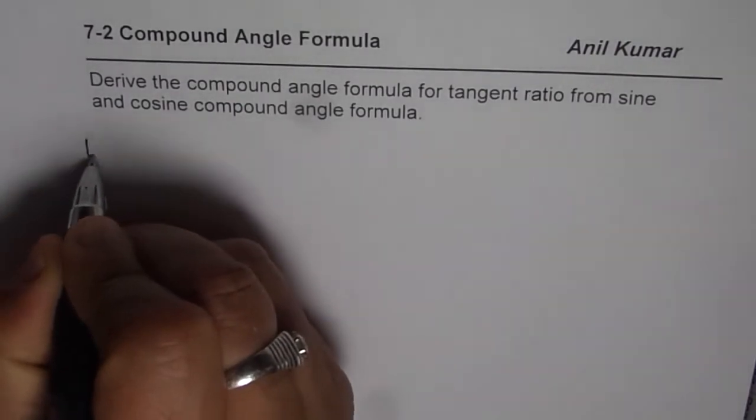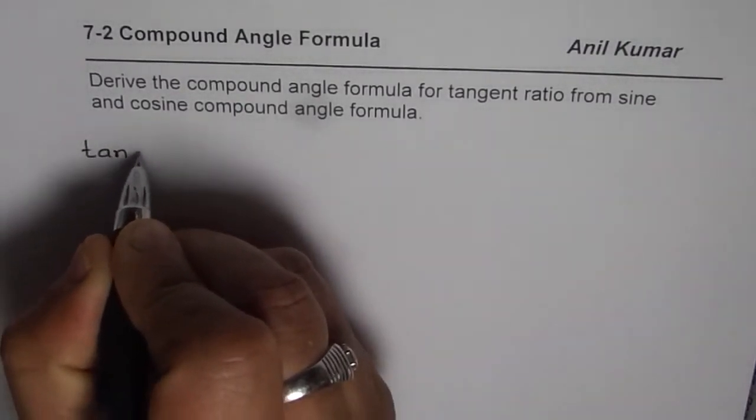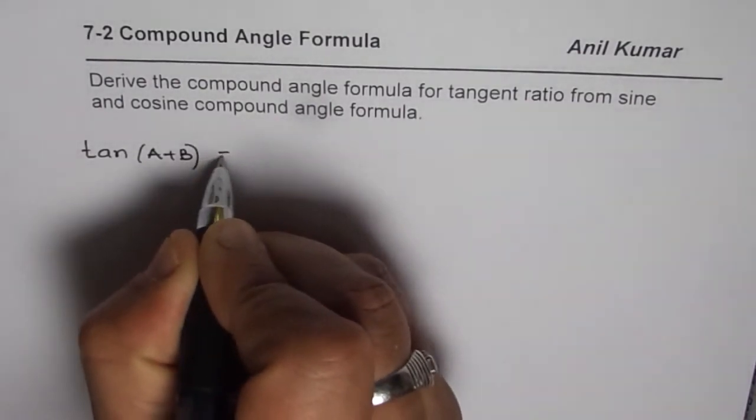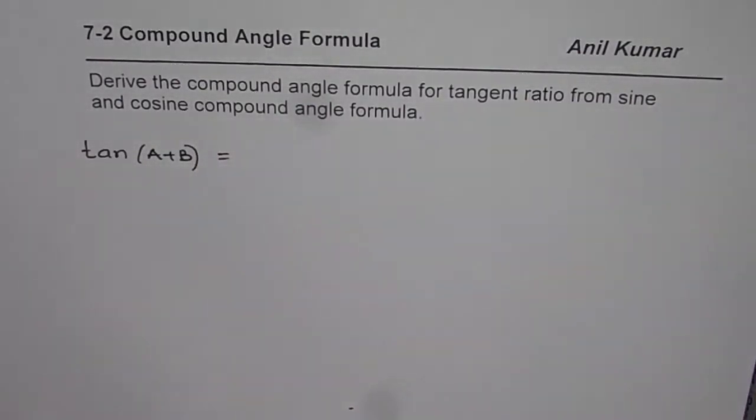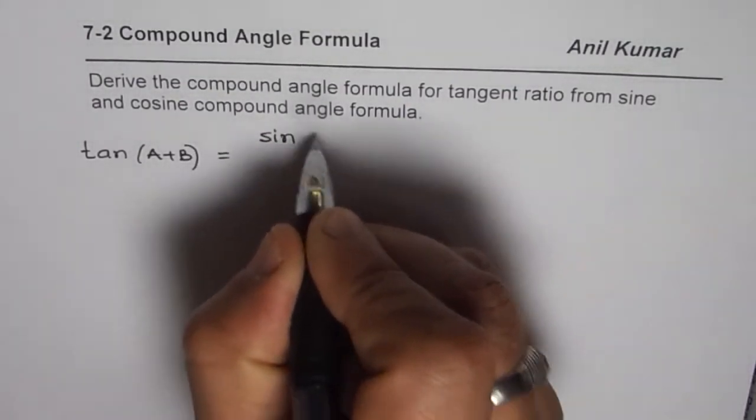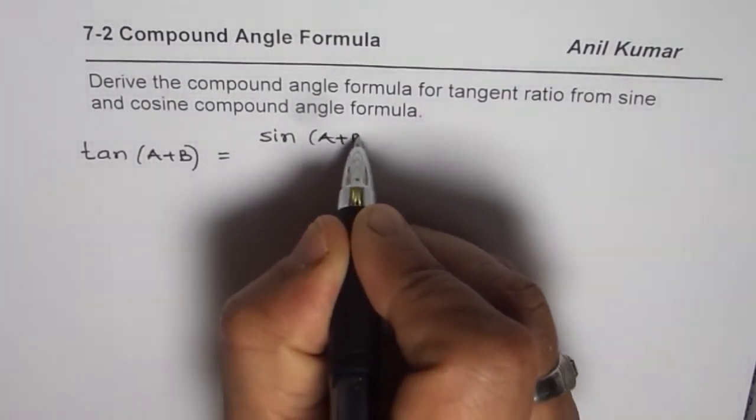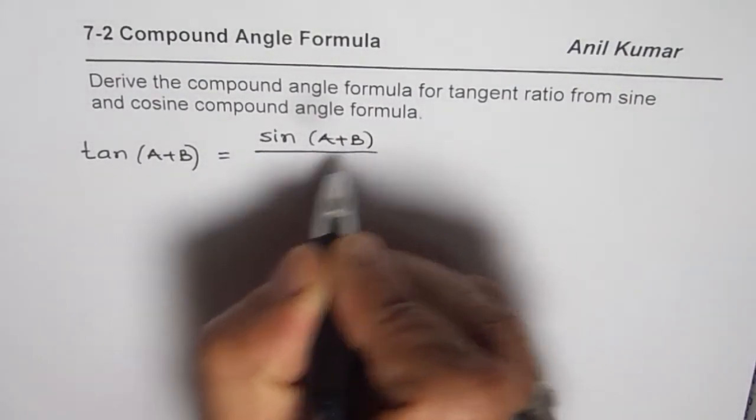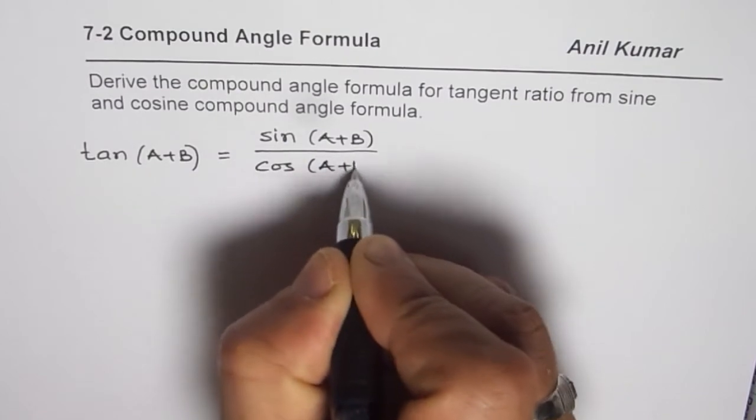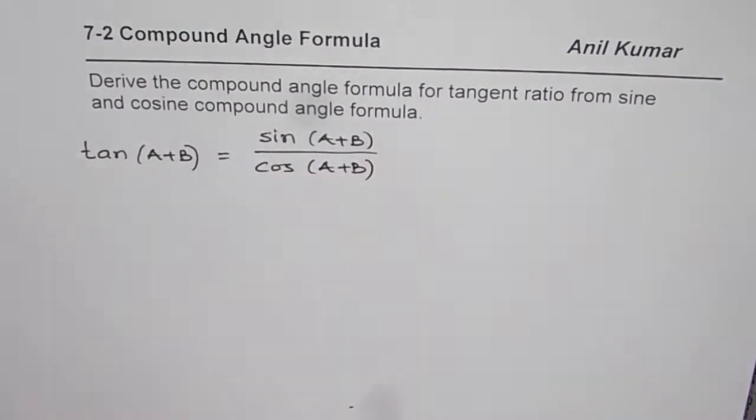What we mean to say is that we need to find what is tan of A plus B, knowing what is sine of A plus B and cosine of A plus B. Now, tan of A plus B should be equal to sine of A plus B divided by cosine of A plus B. That is how tan is defined. It is the ratio of sine over cosine.